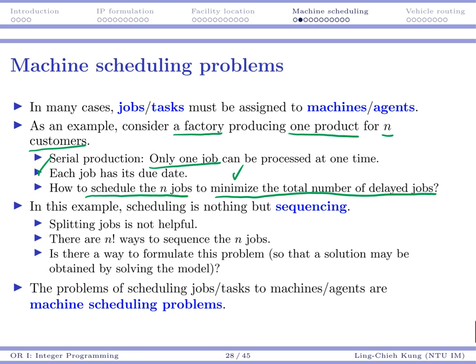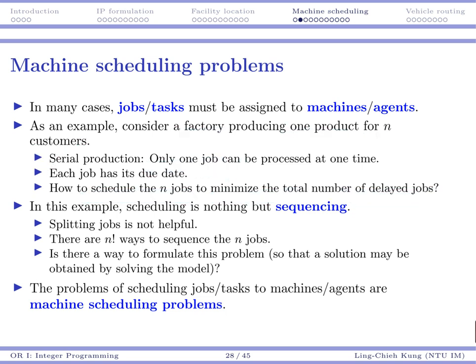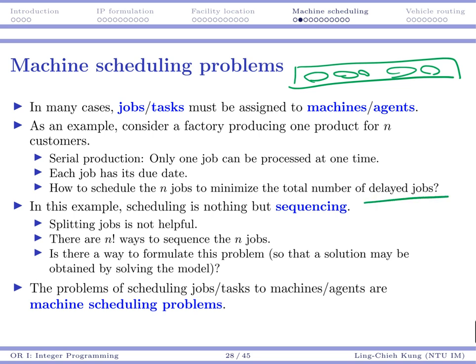In this particular example, scheduling essentially means sequencing. You have one machine and multiple jobs — you need to order these jobs, and that order determines the completion time for each job. You compare the completion time and the due time to determine whether a job is delayed or not. There may be many ways to sequence n jobs; basically, you have n-factorial possibilities, so we cannot enumerate all of them.